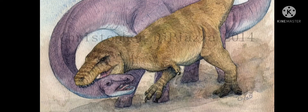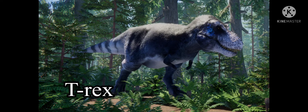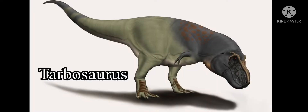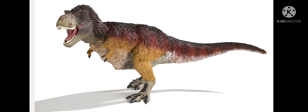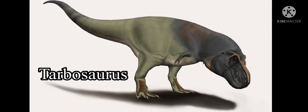Today, I'm gonna be teaching you the differences between T-Rex and its smaller Asian cousin, the Tarbosaurus. For some boomers or maybe some boomer parents, they're gonna be like, they look exactly the same, what's the difference? Well, first of all, that's racist. And no fear, random boomer parent who can't tell the difference between something quality and something not quality. I'm gonna be teaching you the difference between Tarbosaurus and T-Rex.